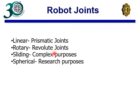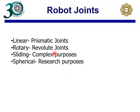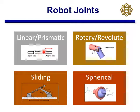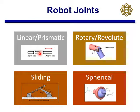Next, what are the different types of joints available in most robots? You will have linear joints, sometimes called prismatic joints; rotary or revolute joints; sliding joints, which are basically a combination of linear and rotary; and spherical joints. A linear joint is like two cylinders going through one another — that is the prismatic or linear joint.